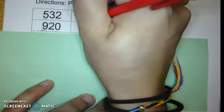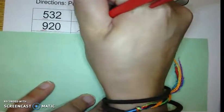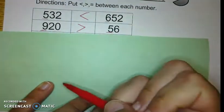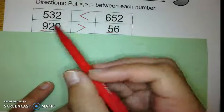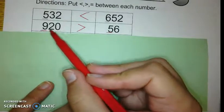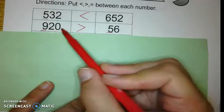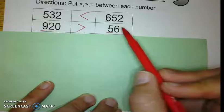The hundreds is bigger. So that means that my little Pac-Man is going to want to open up and eat the bigger number. And this is the greater than symbol because I read it like this. 920 is greater than 56.